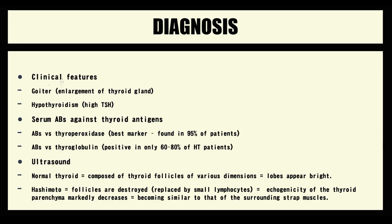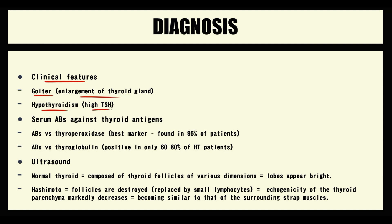So in Hashimoto thyroiditis, autoimmune destruction of the thyroid gland leads to enlargement of the thyroid gland — a condition called goiter — and also causes hypothyroidism. Hypothyroidism, as a compensatory response, causes increasing thyroid-stimulating hormone.